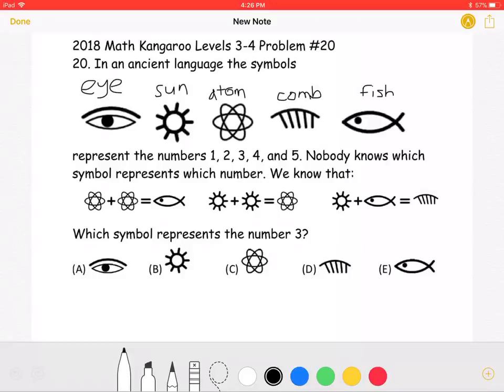Nobody knows which symbol represents which number. We know that the atom plus the atom is equal to the fish, the Sun plus the Sun is equal to the atom, and the Sun plus the fish is equal to the comb. Which symbol represents the number 3?